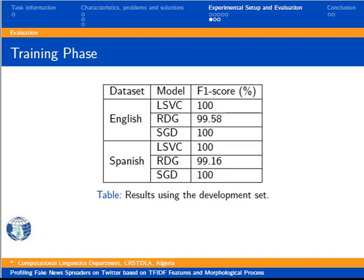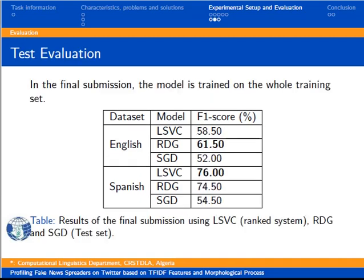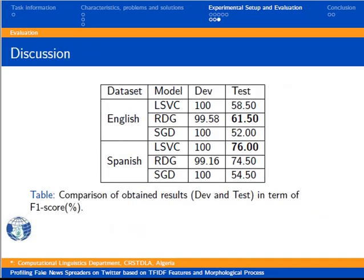We tried different classifiers: Linear Support Vector Classification (LSVC), Linear SVM with Stochastic Gradient Descent (SGD), and Ridge classifier. The results are presented in this table, where we can note some perfect scores reaching 100% with the LSVC and SGD classifiers for both English and Spanish. It's obvious that there is overfitting in the test phase. We retrained our model on the total training data and tested it on the provided test data. The LSVC model performance dropped by 41% and 24% for English and Spanish respectively.